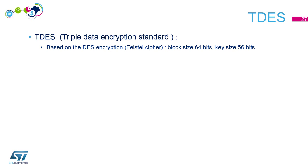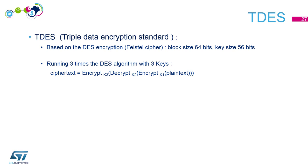We don't use simple DES; we use Triple Data Encryption. We run the DES algorithm three times with three different keys. The plain text block is encrypted with the first key, decrypted with another key, and re-encrypted with a third key. So the key size for Triple DES is 3 × 56 = 168 bits.